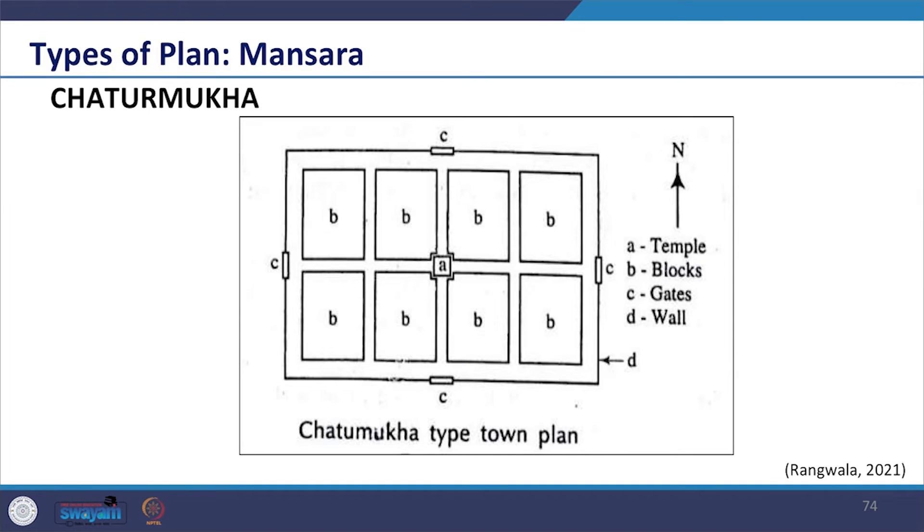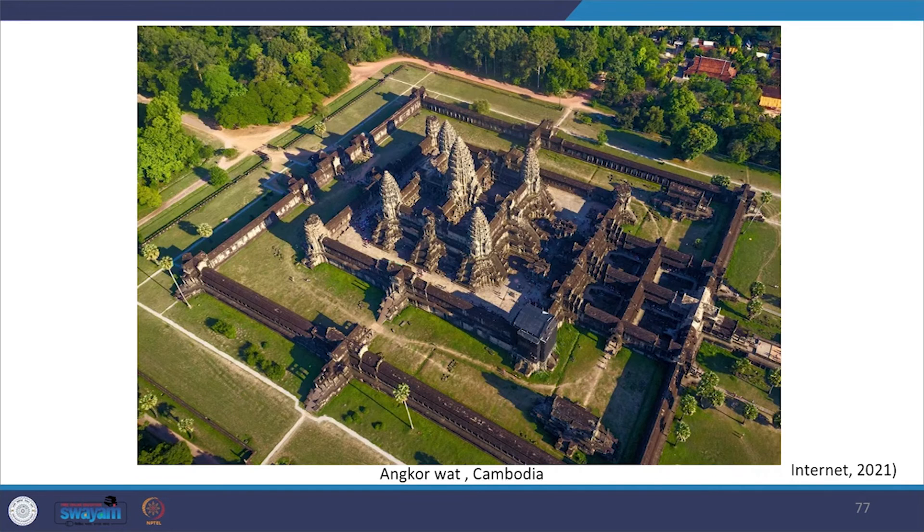Further seeing the Chaturmukha type of plan, as we see in the plan of Angkor Wat, the city may be either square or rectangular having four faces. The town is laid out east to west lengthwise with four main streets, and the temple of the presiding deity will always be at the centre. Chaturmukha type of plan is applicable to all towns starting from the largest town to the smallest villages. It is interesting to see that Angkor Wat in Cambodia, built in the 12th century, was developed on this concept of Chaturmukha.